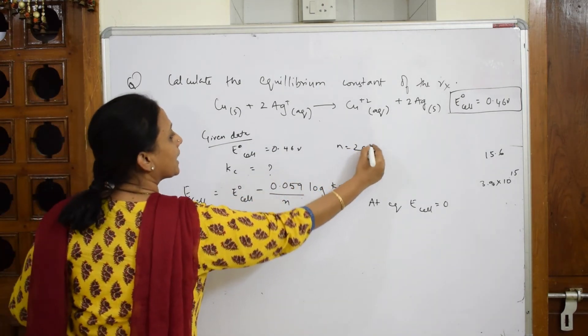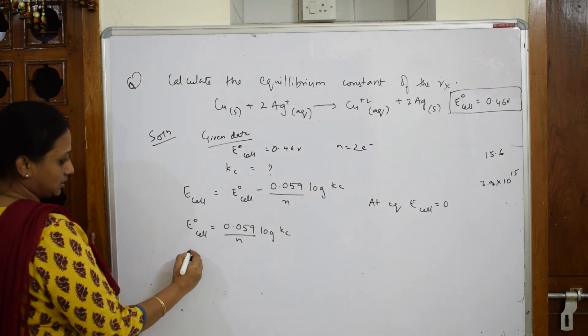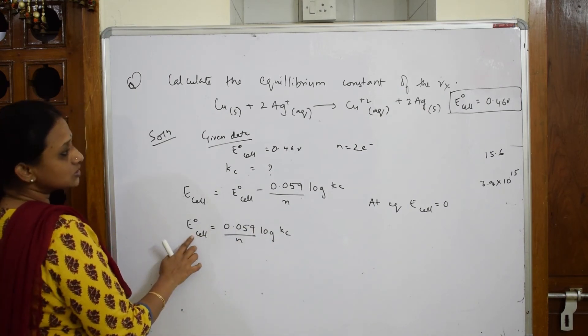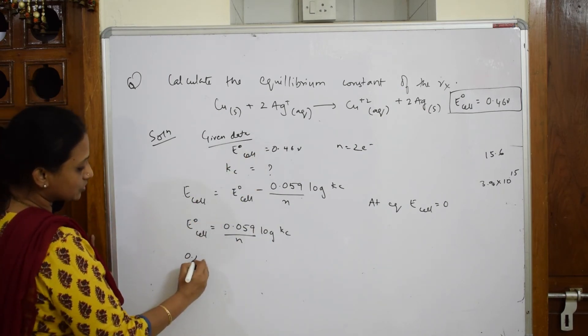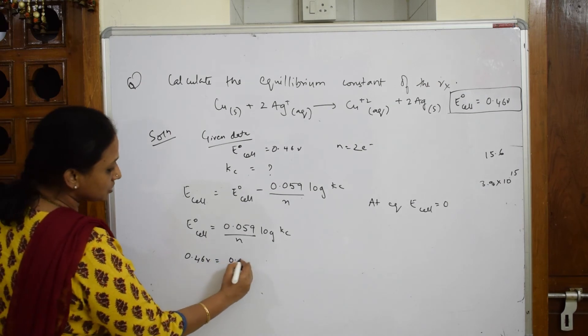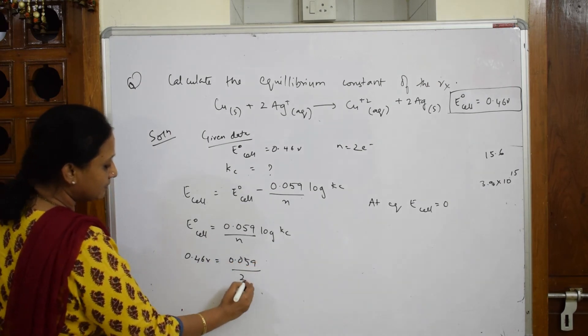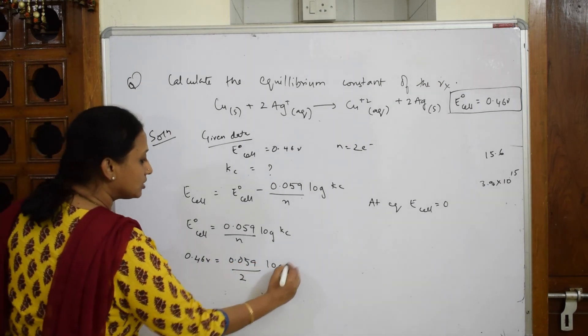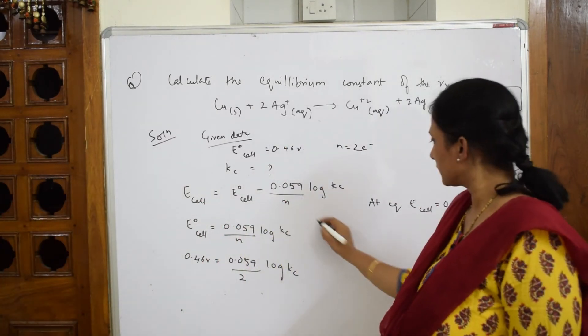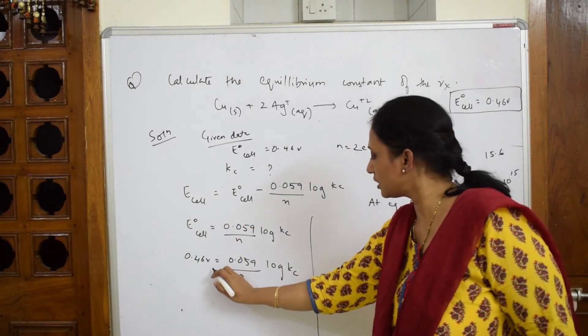Substitute what you defined. I have to find this quantity. E° cell is given to us, it's 0.46 volts, is equal to 0.059 divided by 2 log Kc.